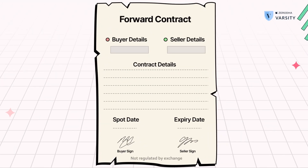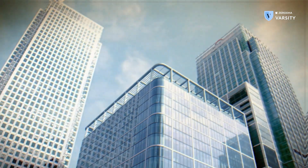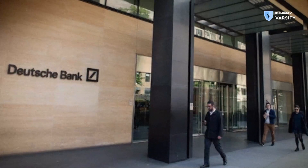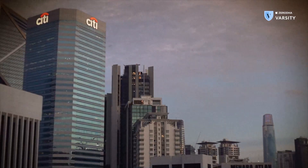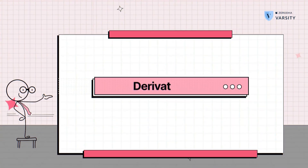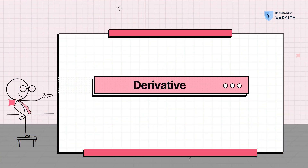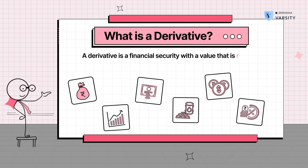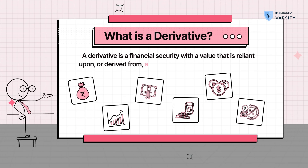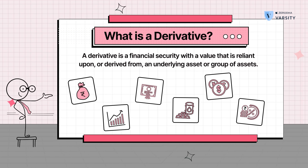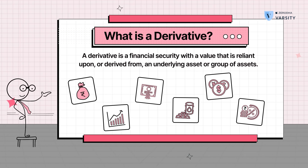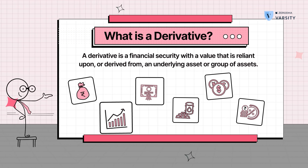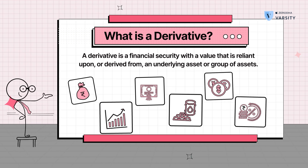Forward contracts are still in use today, although only among a select group of parties, such as companies or banks. That is the simplest form of derivative. A derivative means that the asset derives its value from an underlying asset. The underlying could be anything — it could be a stock, a bond, a commodity, or even currency.